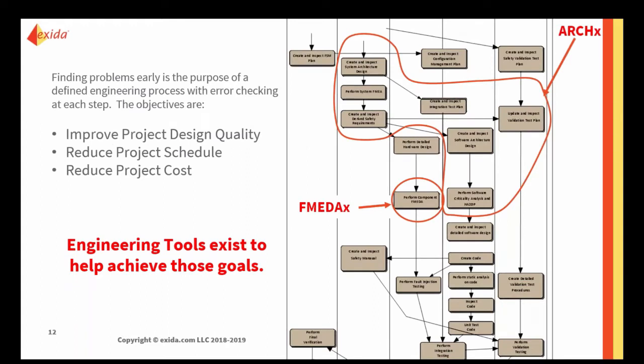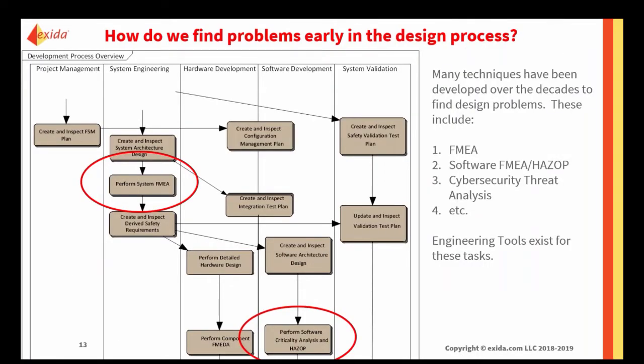Quality engineers and project management people work hard to reduce project schedule and cost, and the key concept is the creation of a defined engineering process with error checking at every step. The objective is to define the process: what are you going to do, in what sequence, and what error checking will you do for every step? Engineering tools were created by many different companies to help achieve those goals and find errors early.